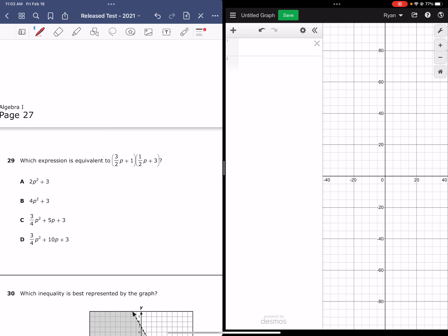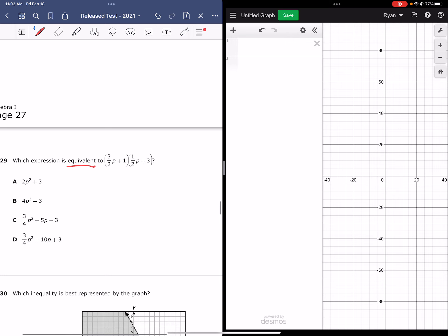Which expression is equivalent to 3 halves p plus 1 multiplied by 1 half p plus 3? Remember that the word equivalent is just a fancy way of saying the same. We want to figure out which expression is exactly the same as the one given in the problem.